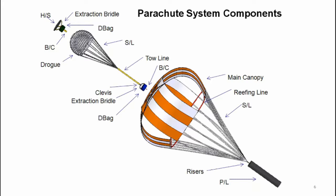The drogue parachute is attached to the main parachute bag with a long tow line. Inside this bag is the main canopy. After approximately 10 to 15 seconds, a line is cut along the drogue to pull the main parachute bag out of the payload, and as it does, the main canopy deploys. The main canopy is designed to provide the full deceleration of the payload and provide the soft landing of the system when it hits the water or the ground.